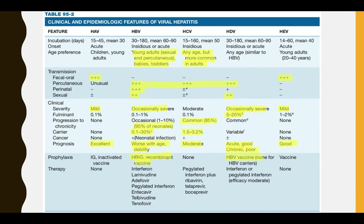Feco-oral transmission applies to A and E. Percutaneous transmission applies to B, D, and C. Sexual transmission applies to B and D; C is plus or minus. For clinical severity: A and E are mild. B, C, and D are occasionally severe and can progress to fulminant hepatitis. Carrier states are present for B, C, and D. A and E have better prognosis; E is worse than A.